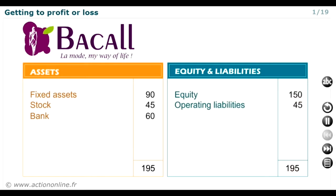Secondly, what are the uses of these sources of funds — that's to say how have they been employed? Bacall acquired its operating assets to the value of €90,000, together with opening stock of €45,000, and even has cash left over — a real textbook case. The business has also opened up a shop and taken on a salesman, so trading can begin.